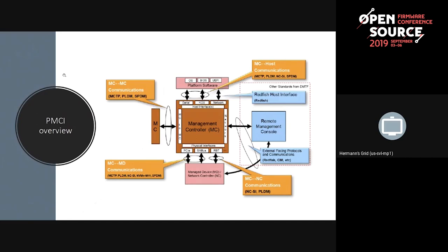The BMC can actually talk to other kinds of BMCs — for example, if you have a system design where one BMC acts as the out-of-band interface provider and the other BMC deals with inside-the-box communications. Then there's also a remote management console. The interface there to the BMC is actually not in-band; it's typically over the network. But the remote management console can issue something like Redfish to the BMC, and then the BMC transforms that to an in-band communication path to talk to other devices.